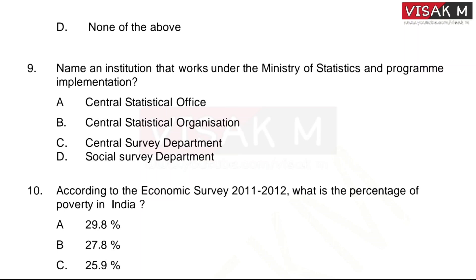Question nine: Name an institution that works under the Ministry of Statistics and Program Implementation. Options: A, Central Statistical Office; B, Central Statistical Organization; C, Central Survey Department; D, Social Survey Department. The right answer is option A, Central Statistical Office.